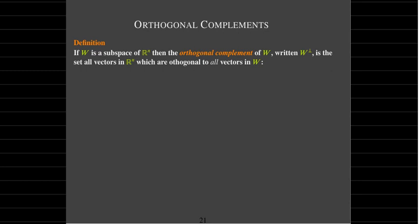Here's our formal definition. We can only talk about orthogonal complements of subspaces — that's why we had a plane passing through the origin, which represents a subspace. If we have a subspace W, then the orthogonal complement of W, written W-perp, is the set of all vectors in Rn which are orthogonal to all vectors in W. You should always have in mind a plane through the origin and its corresponding normal line.